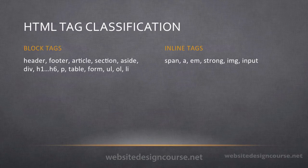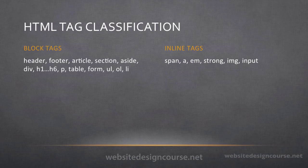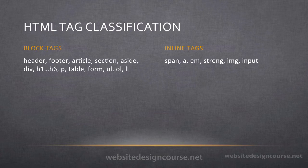HTML tags fall into two broad classifications: block or inline tags. Block tags are things like the header tag, the footer tag, article — you can see a simple list of about ten different tags, including the header one tag as an example. Inline tags on the right are things such as span, anchor tags, image tags, and strong emphasis.